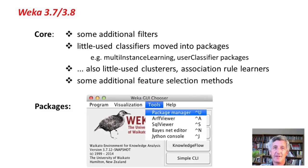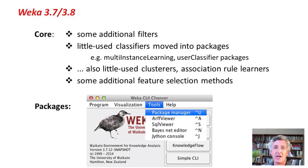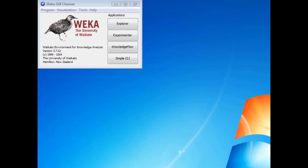In the new version, the core has some additional filters, some little-used classifiers have been moved into packages, and there are additional feature selection methods. The most important innovation is the package system. You go to the GUI chooser's Tools menu and choose the Package Manager. It connects to the Internet to get a list of available packages.